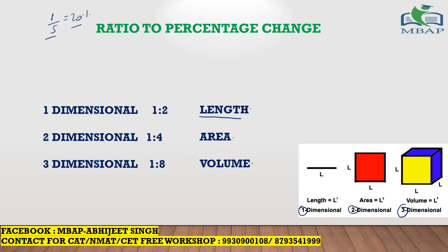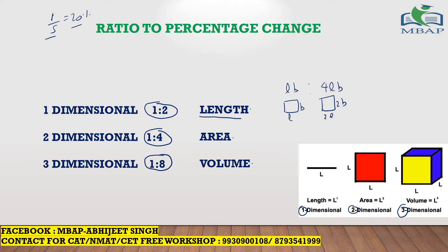Now understand this application well. If for any figure — be it a cuboid, a cone, a rectangle, or a square — if the lengths are in the ratio of 1 to 2, the corresponding area will be in the ratio of 1 to 4, and the corresponding volume will be in the ratio of 1 to 8. For example, if rectangle one has length L and breadth B, and rectangle two has length 2L and breadth 2B, the area ratio is LB to 4LB, which is 1 to 4.